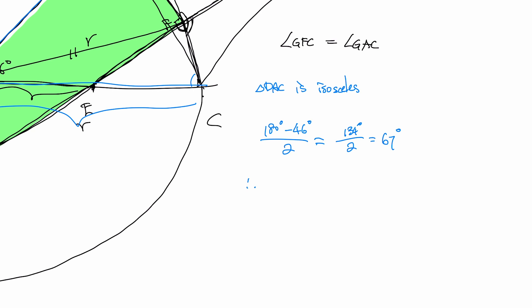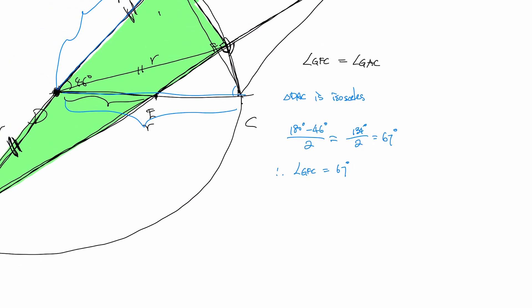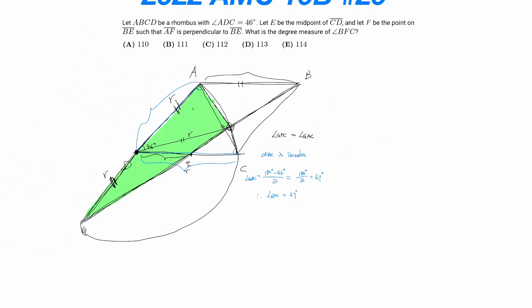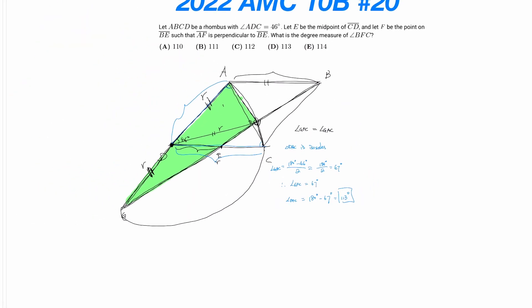So if that is 67 degrees, then we know that angle GFC is also equal to 67 degrees, because that's equal to the angle GAC. So angle GAC is equal to that much, which means that the angle we want to find, angle BFC, is 180 degrees minus this 67 degrees, or 113 degrees, which is our answer choice, D.